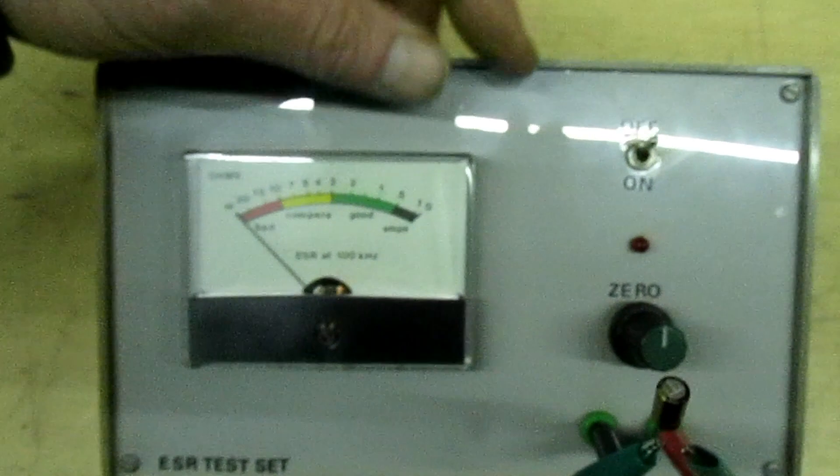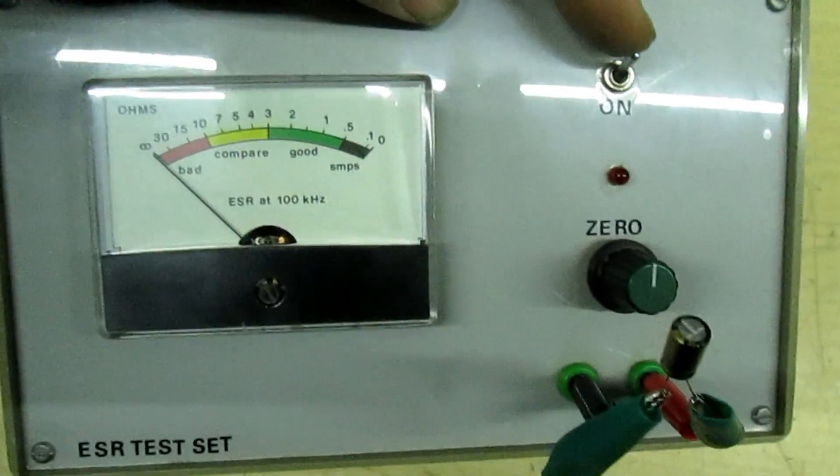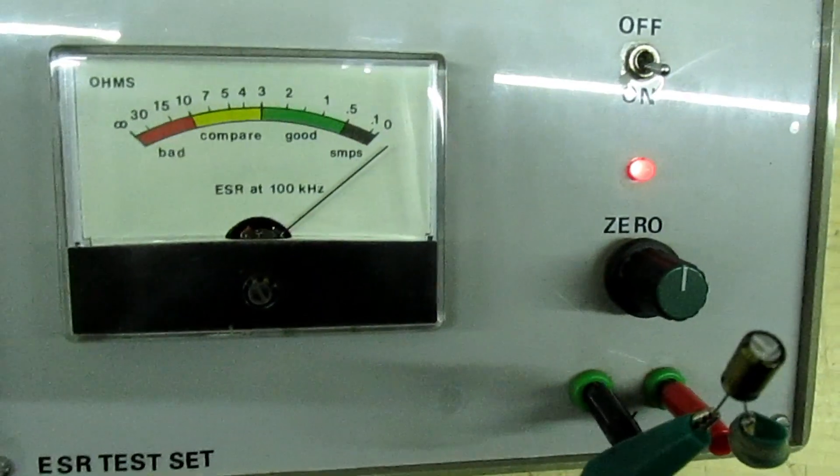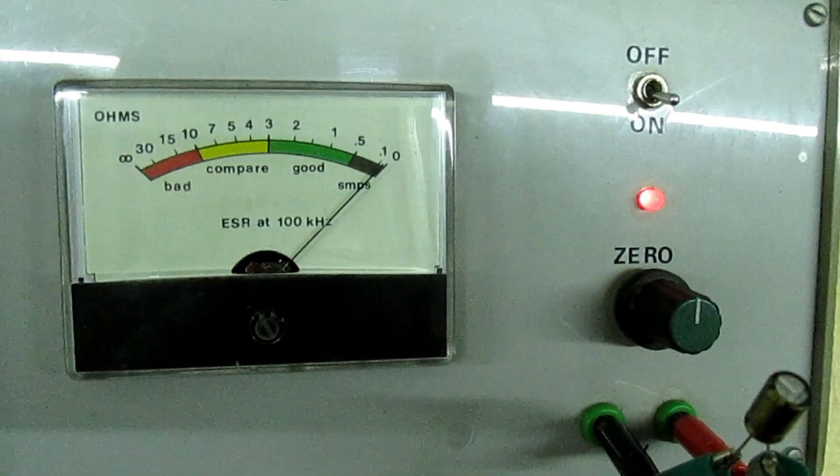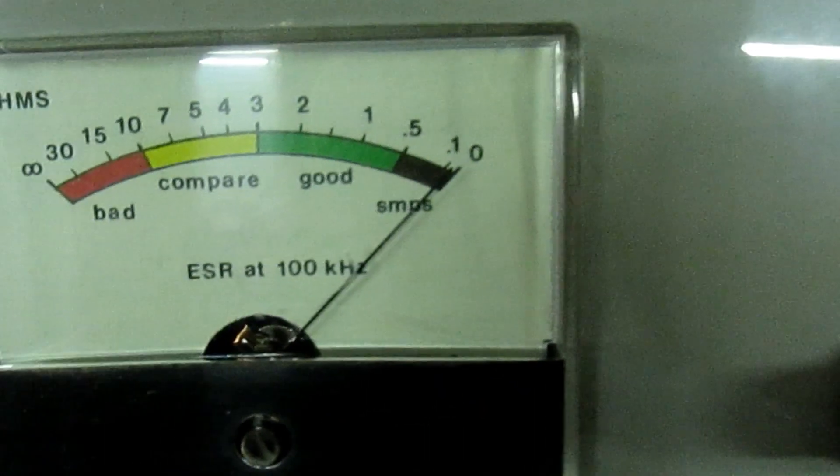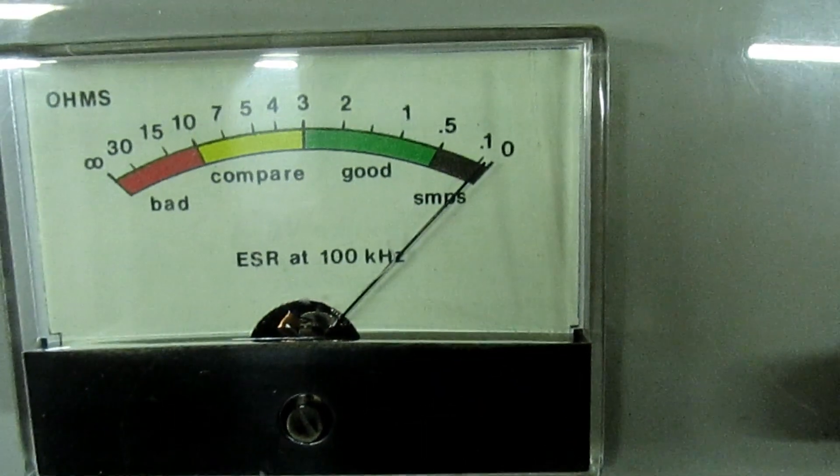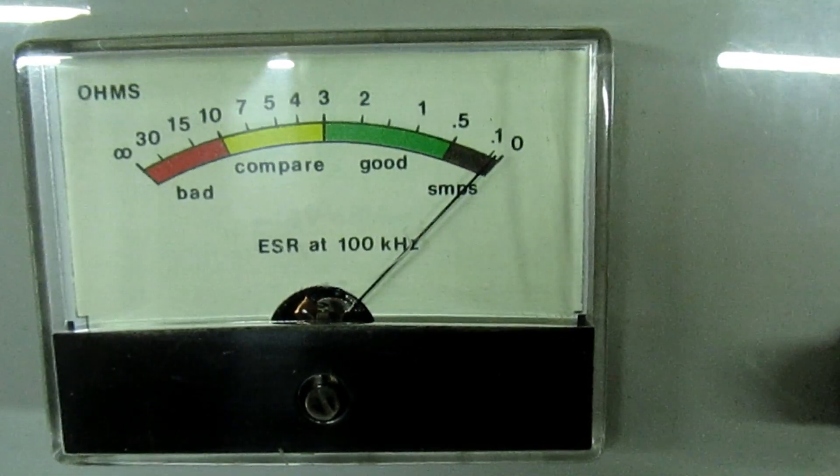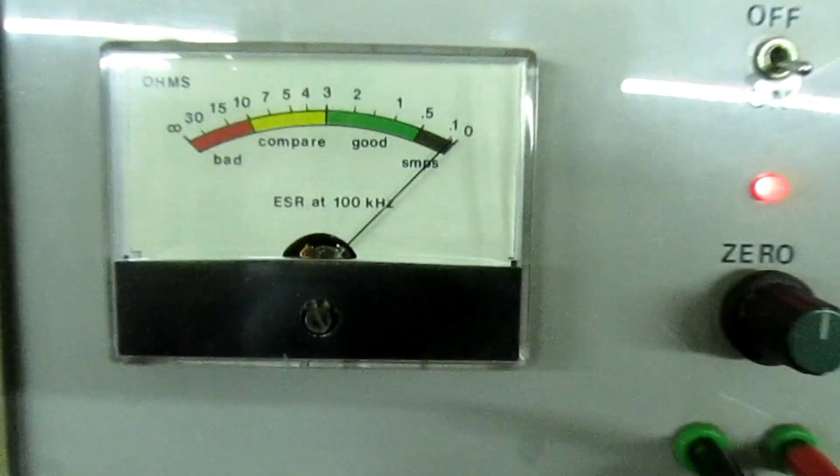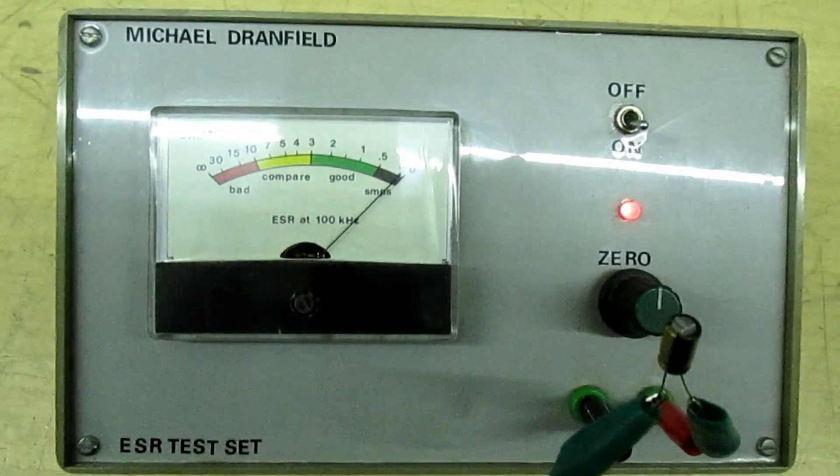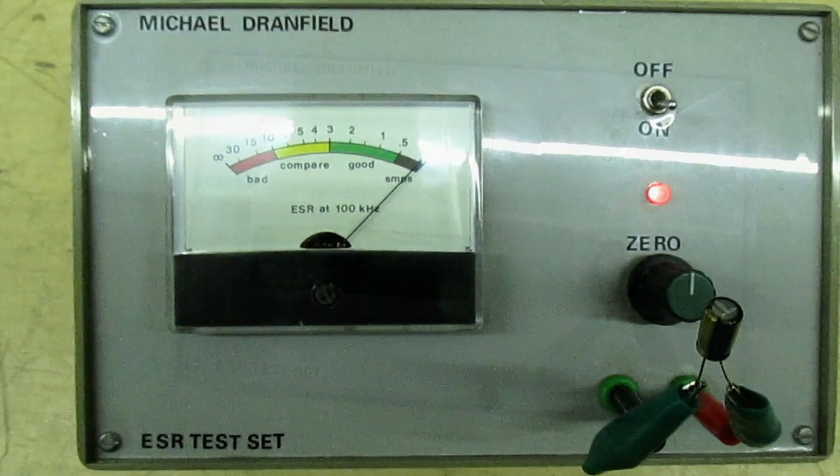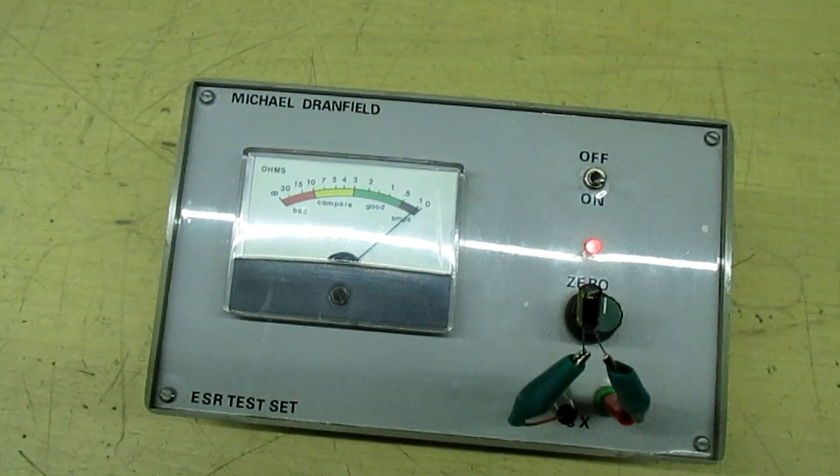That's 96.82 microfarad with an effective series resistance of 1.74 ohms. I'll just transfer that capacitor now into the homemade tester and we'll compare the readings. This takes a couple of seconds to stabilize.